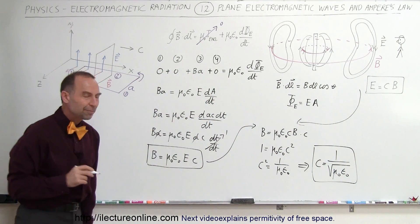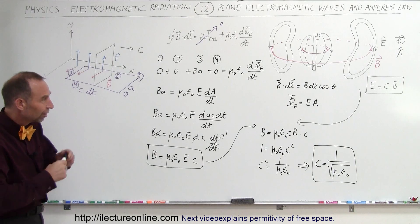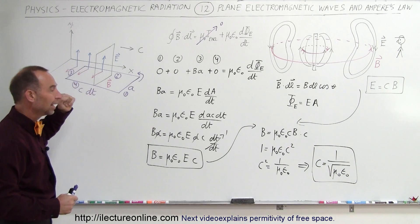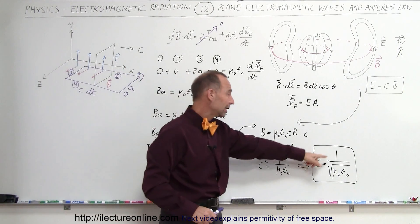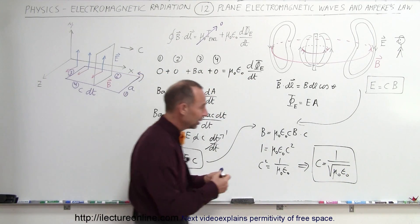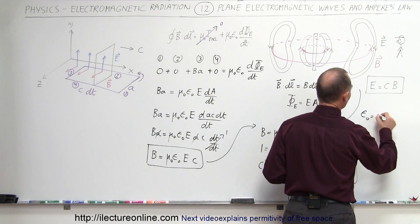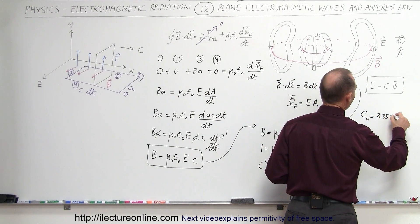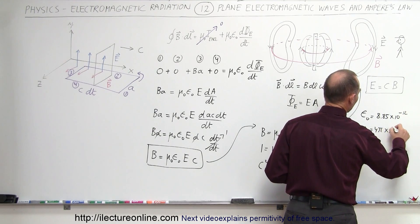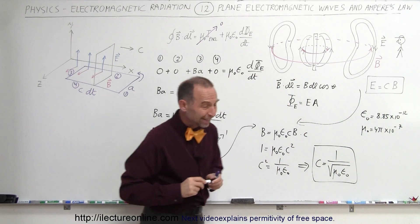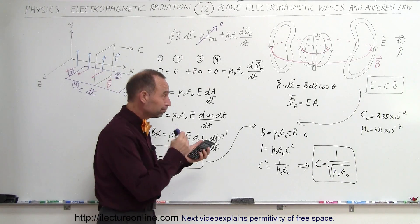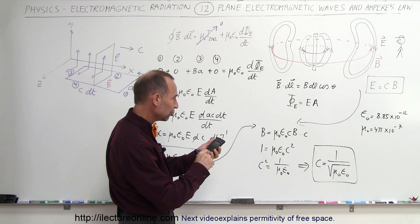That was a great discovery made by Maxwell. When he used Maxwell's equations — Faraday's Law, Ampere's Law, and Gauss's Law — and combined them all to describe electromagnetic radiation, he discovered that the speed of light is simply equal to 1 over the permeability of free space times the permittivity of free space. If you recall that ε₀ equals 8.85 × 10⁻¹², and μ₀ equals 4π × 10⁻⁷, if we multiply those two together, take the square root, and take the inverse of that, we should get the speed of light. Let's verify that.